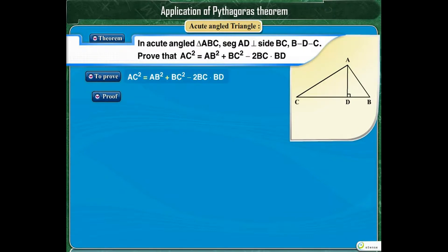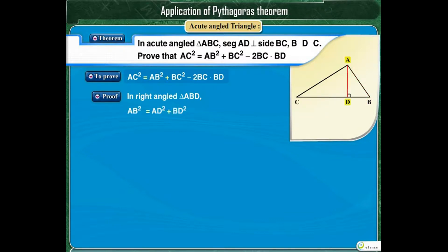Proof. Segment AD is perpendicular to side BC. Therefore, we get two right-angled triangles: triangle ABD and triangle ADC. In right-angled triangle ABD, by Pythagoras Theorem, AB squared is equal to AD squared plus BD squared. Also, in right-angled triangle ADC, by Pythagoras Theorem, AC squared is equal to AD squared plus DC squared.